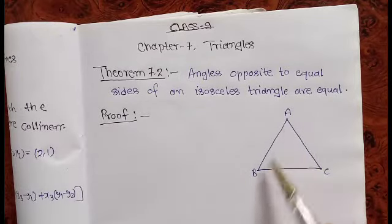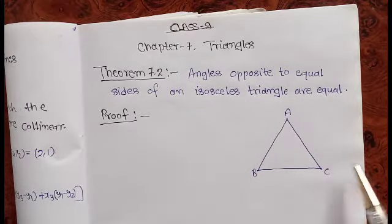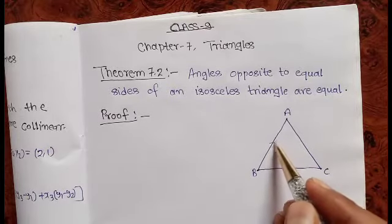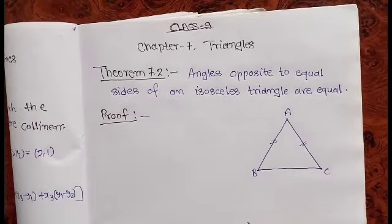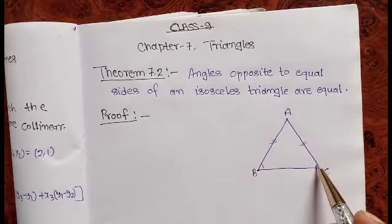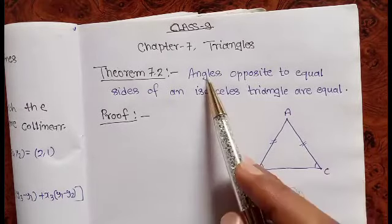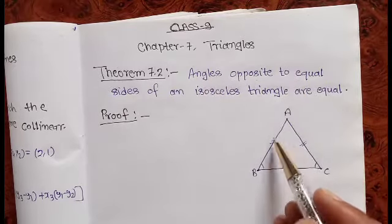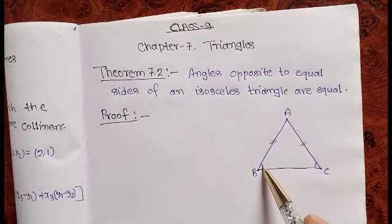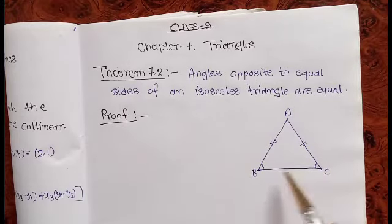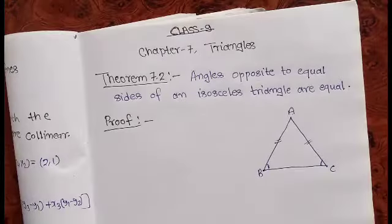Here ABC is an isosceles triangle in which AB side is equal to AC. We have to prove that angle B is equal to angle C. The angles opposite to the equal sides AB and AC should be equal.